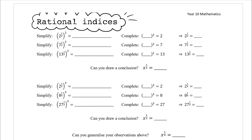Today we want to have a look at rational indices — that is, indices that are fractions. You can see examples like two to the power of a half, seven to the power of a half, eight to the power of a third, etc. I want to start by thinking about some examples and using what we know to observe patterns that enable us to work out what's happening with rational indices. So we want to simplify two to the power of a half.